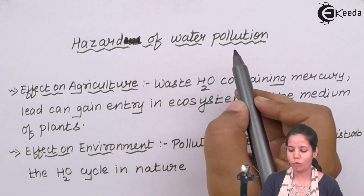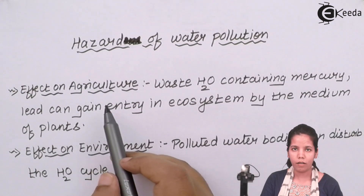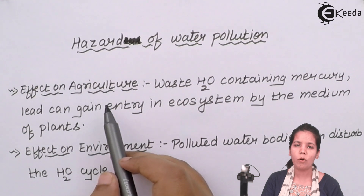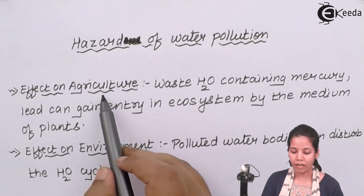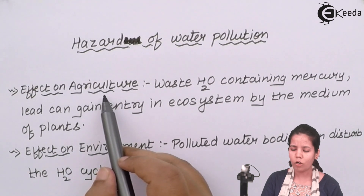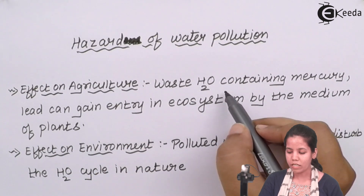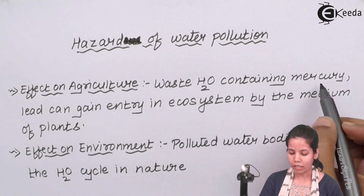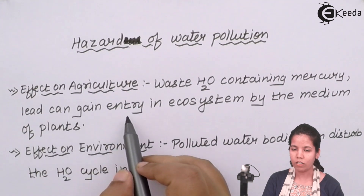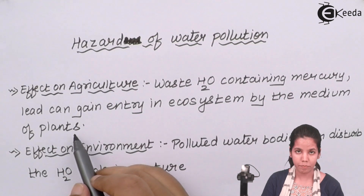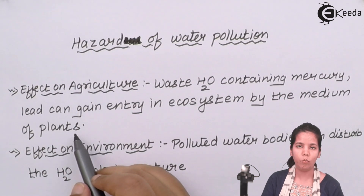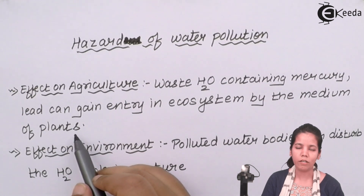When I say hazards of water pollution, water pollution can have ill effects on various phases of life. One of the phases is effect on agriculture. Waste water containing mercury and lead can gain entry into the ecosystem by the medium of plants. If the water is polluted and the farmer uses the same water on crops, it will obviously gain entry into the plant kingdom.